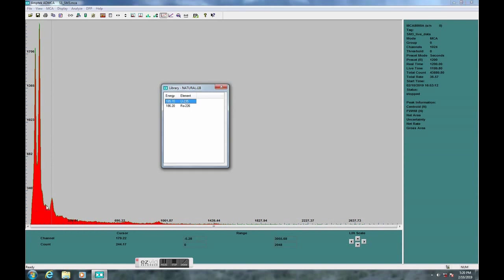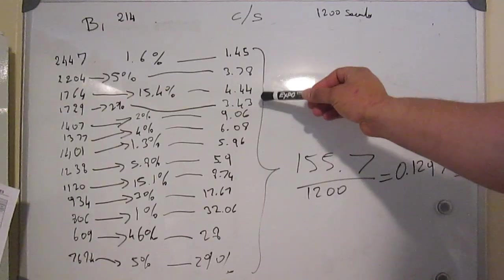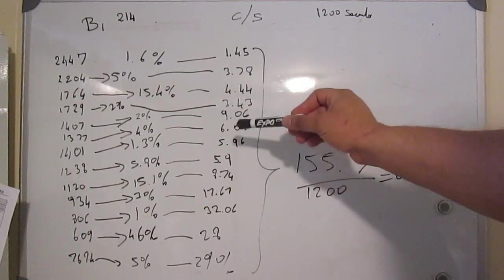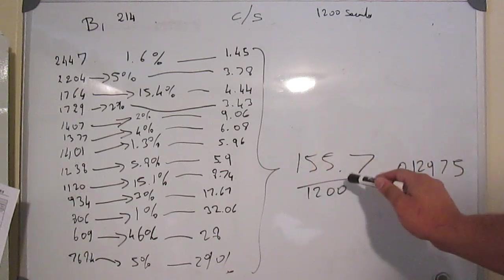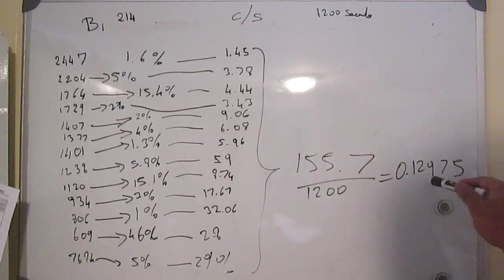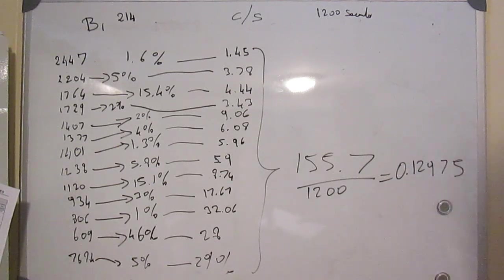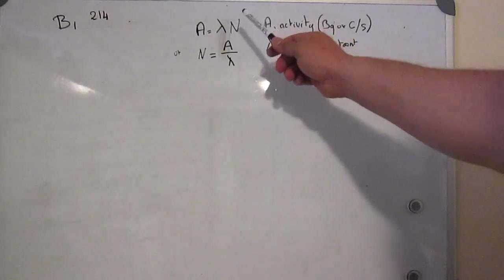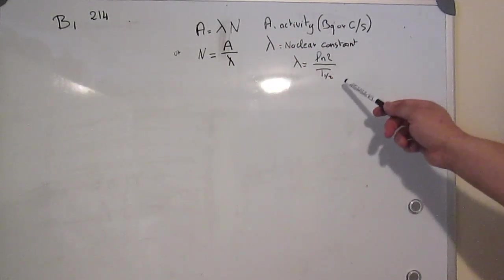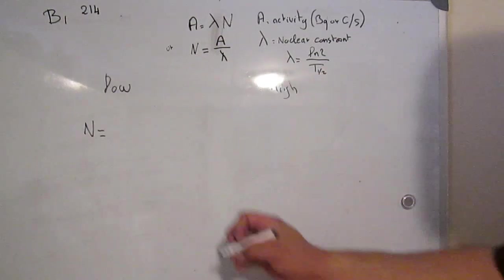So, I thought I'd calculate how much Bismuth-214 is responsible for all this activity. By adding the count at each energy minus the background, I had a total count of 155.7. Now, divide this by the acquisition time of 20 minutes, or 1200 seconds, and we get 0.12975 counts per second. Now, this must be corrected to compensate for the detector's efficiency, the dead time, the geometry of the source, etc.